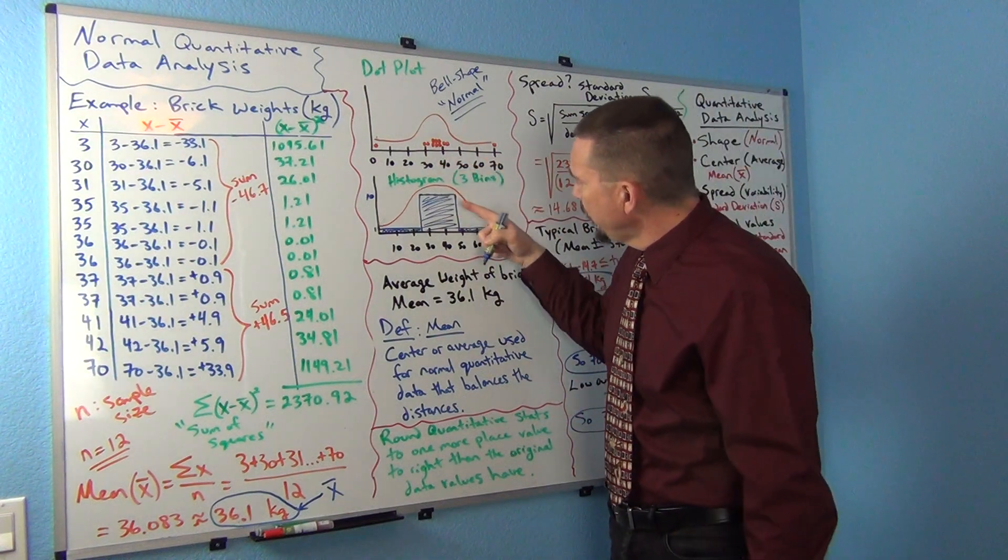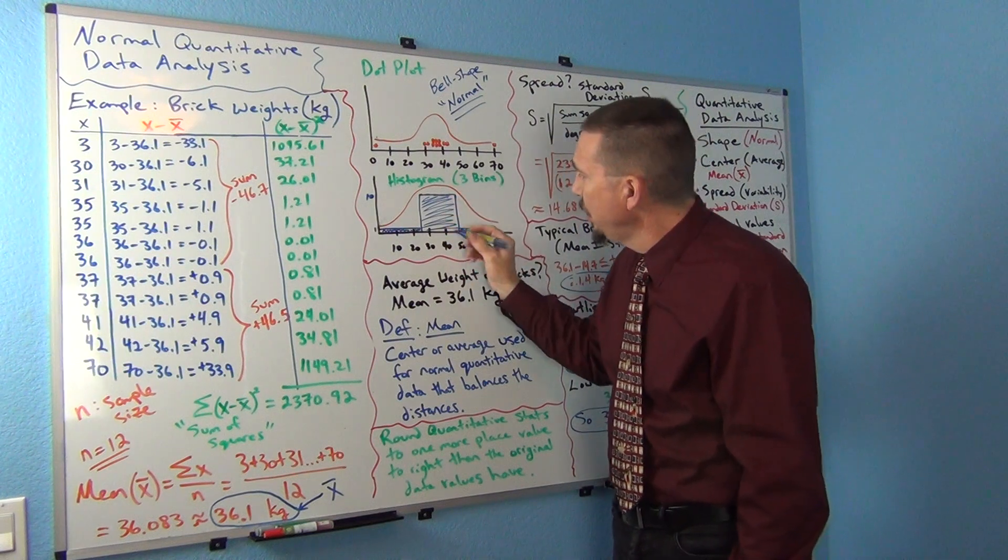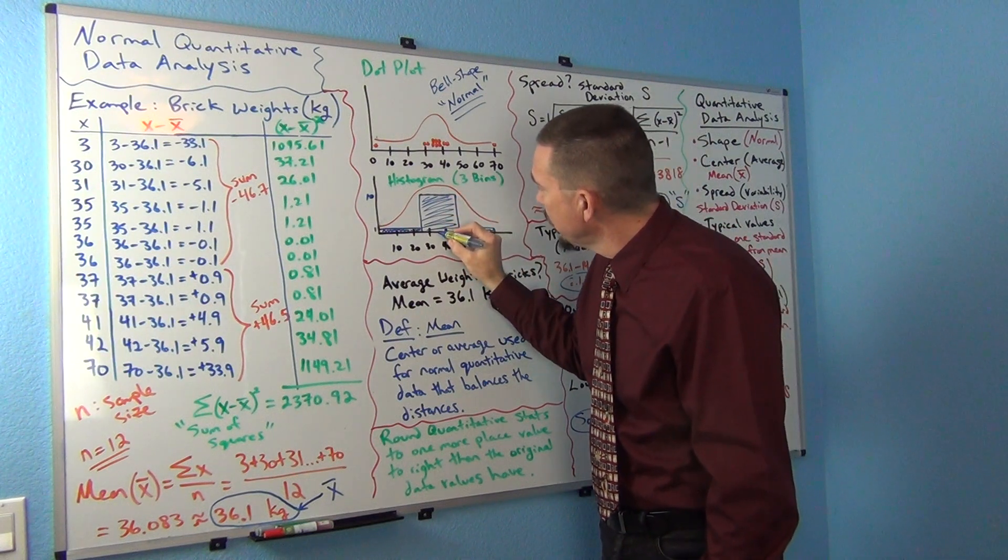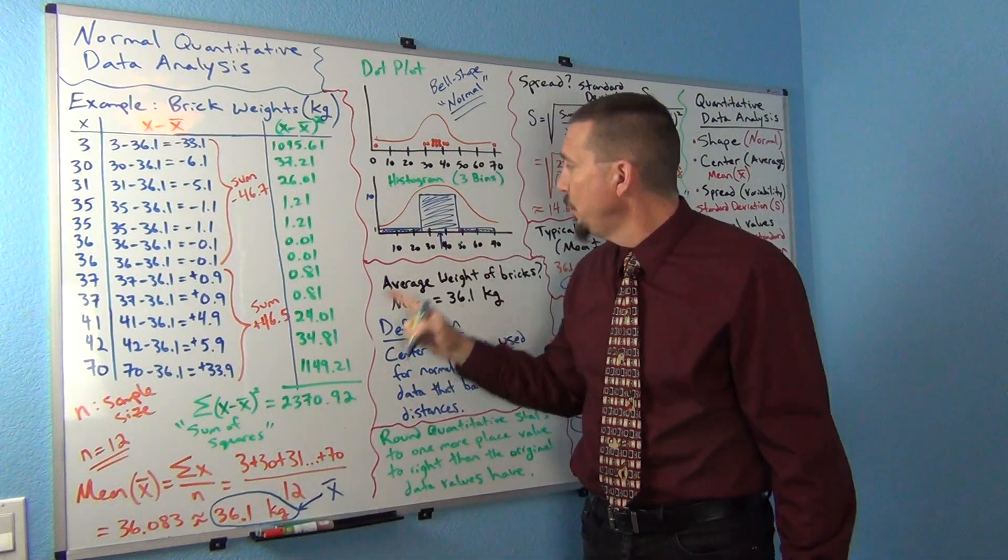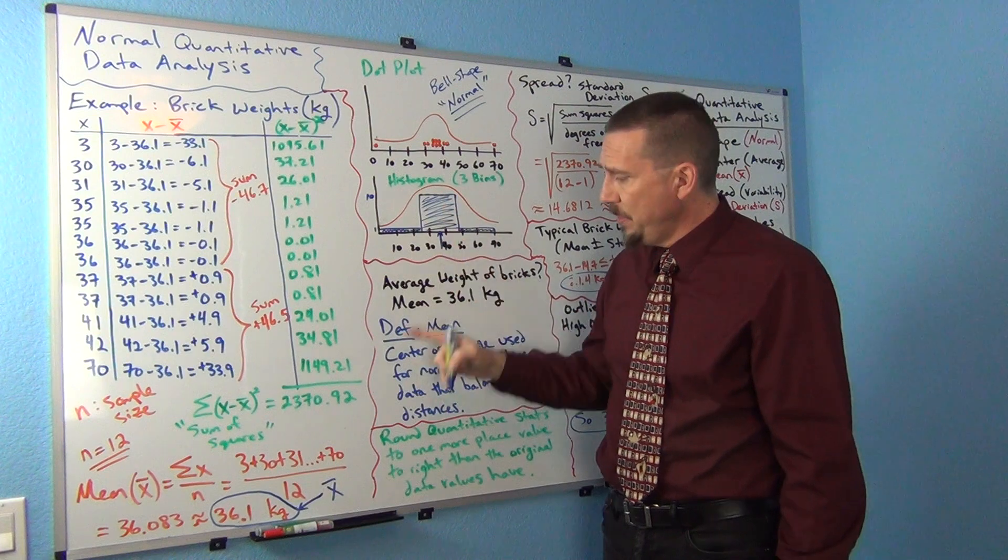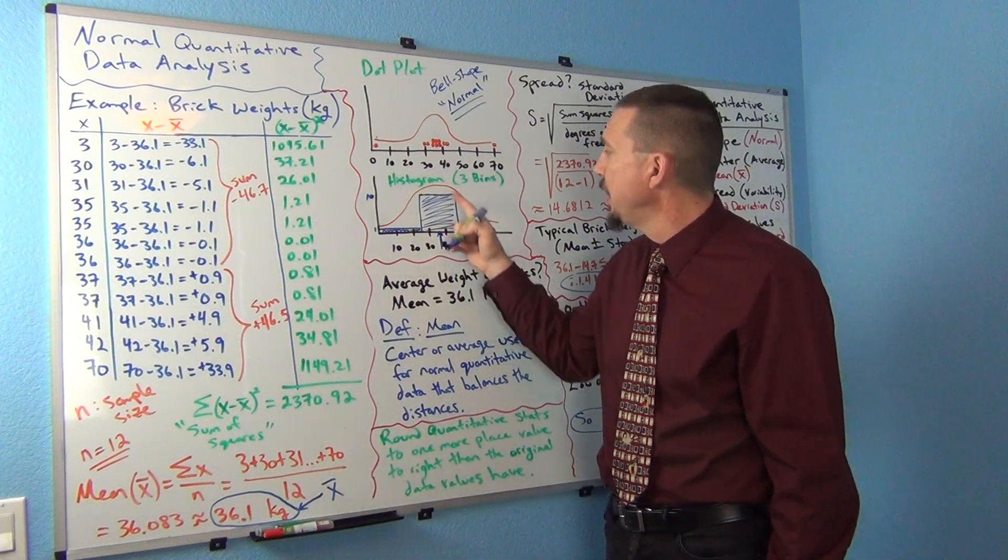Now where's the center? Well if I look here, you're looking for sort of the center would be pretty close to where the highest bar in your, there's my center, right? And that is pretty close to 36.1. We can see visually that the average, the mean average, in this case at least, is pretty close to the highest bar.